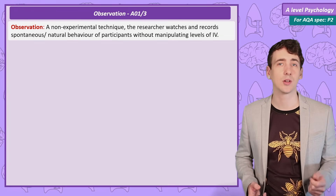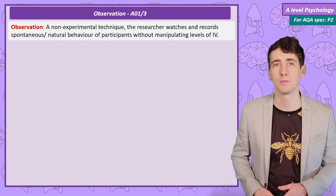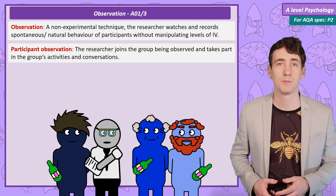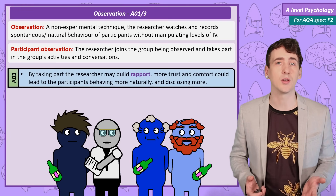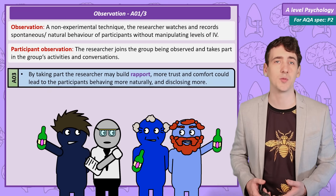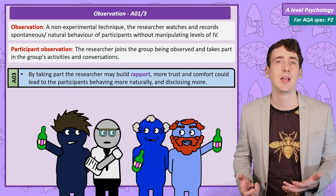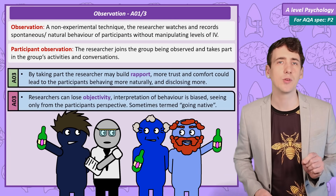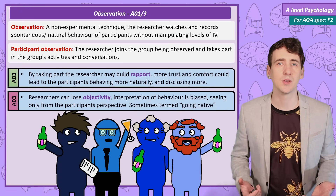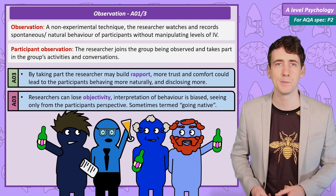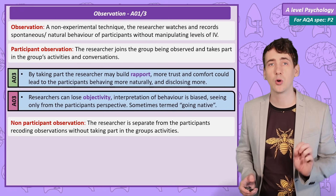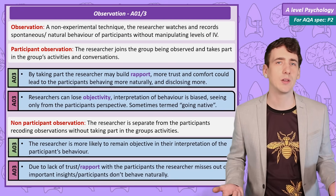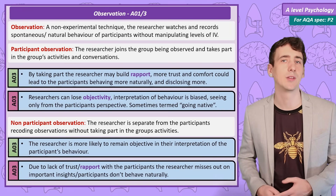One more choice to consider is whether the researcher will conduct a participant or non-participant observation. In a participant observation, the researcher becomes involved in the group they are studying, maybe doing the same activities as the participants. The advantage is the researcher has first-hand knowledge of the participants' situation and may build rapport, meaning participants may open up more and behave more naturally. However, the researcher runs the risk of losing objectivity, becoming biased because they can only see the situation from the participant's point of view. A non-participant observation involves the researcher standing back and recording the group without becoming part of it, which increases objectivity but risks losing important findings by being too far removed from the participants' experiences.